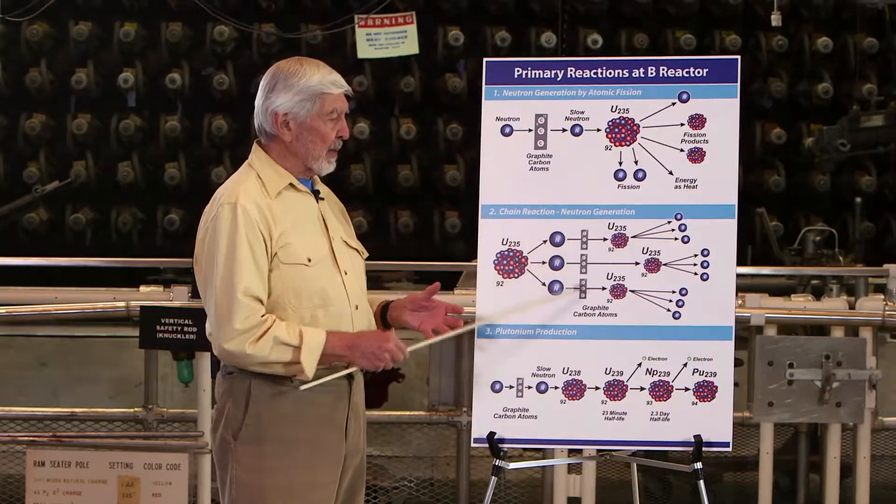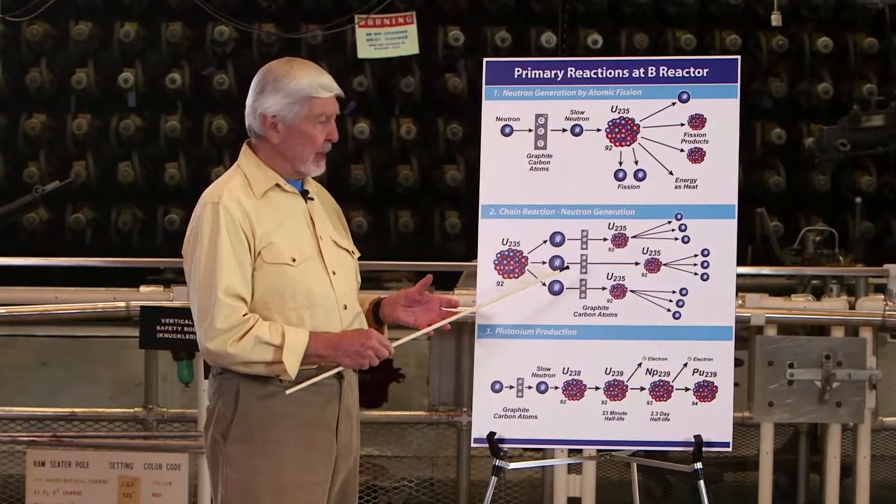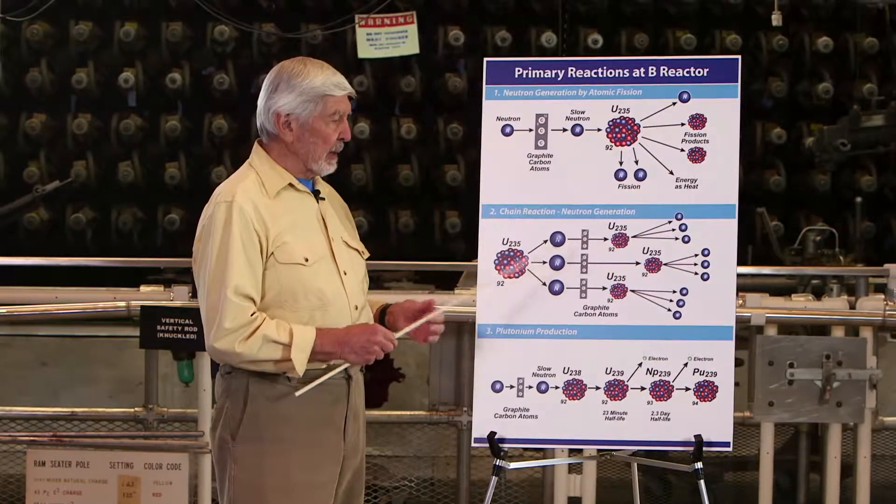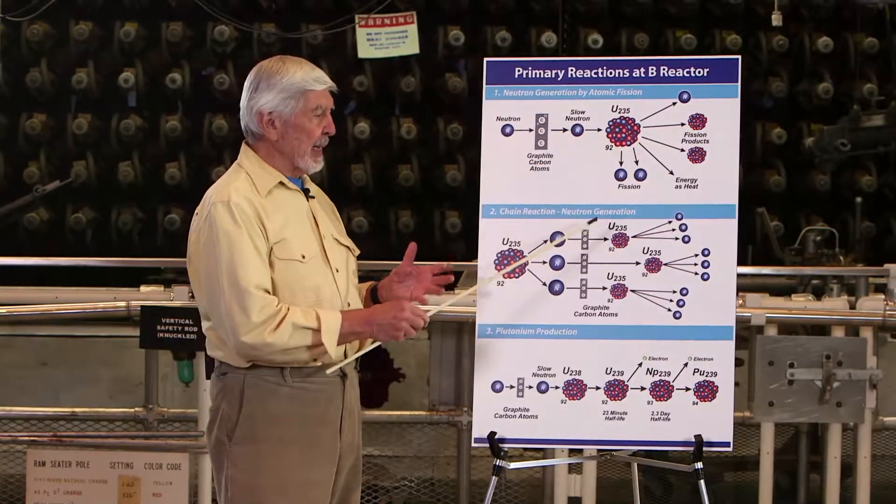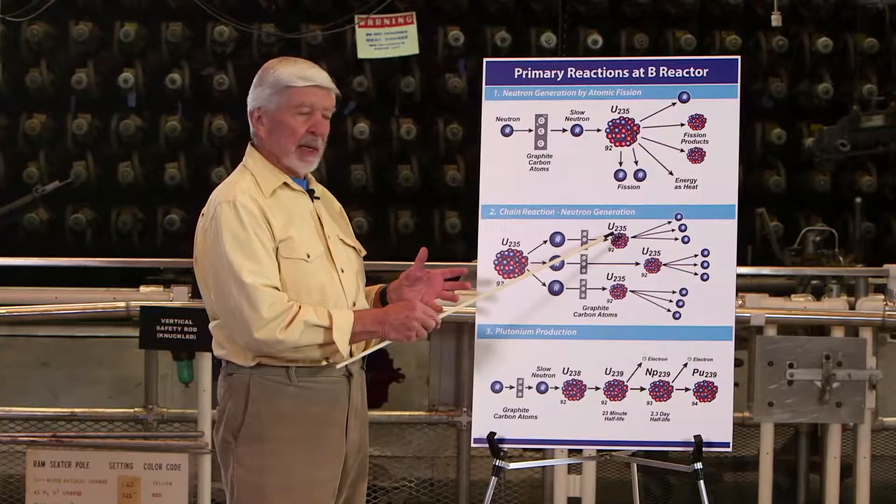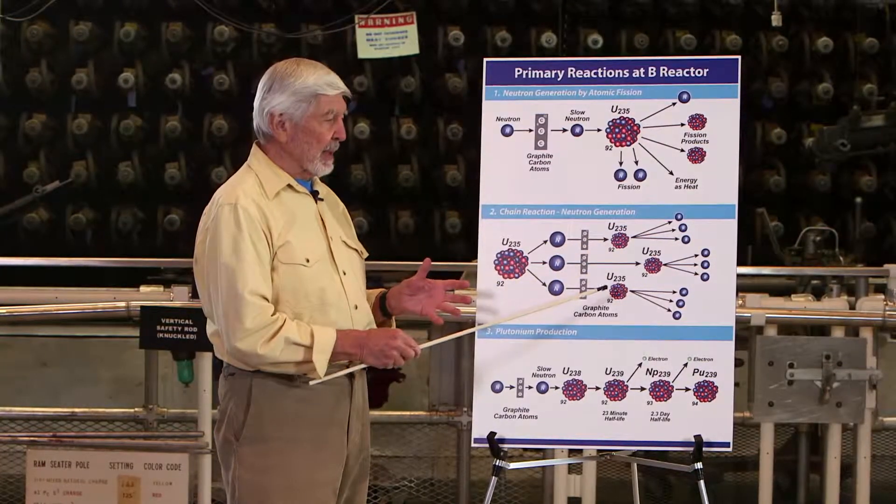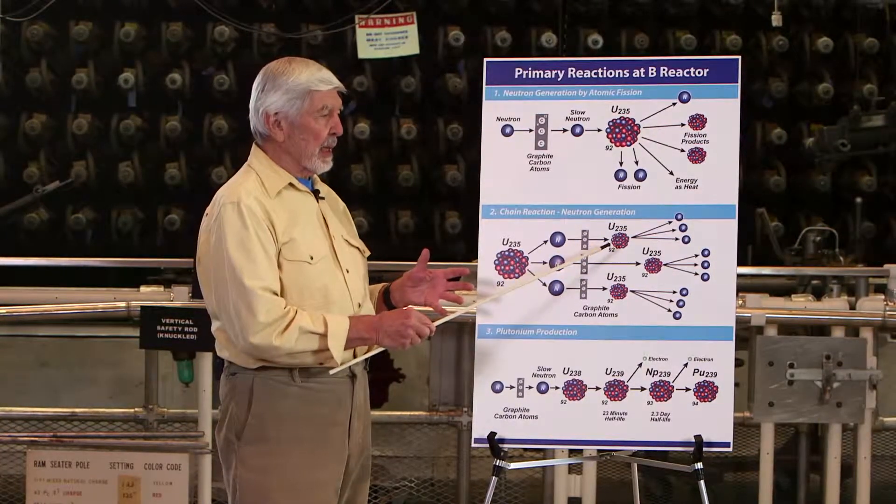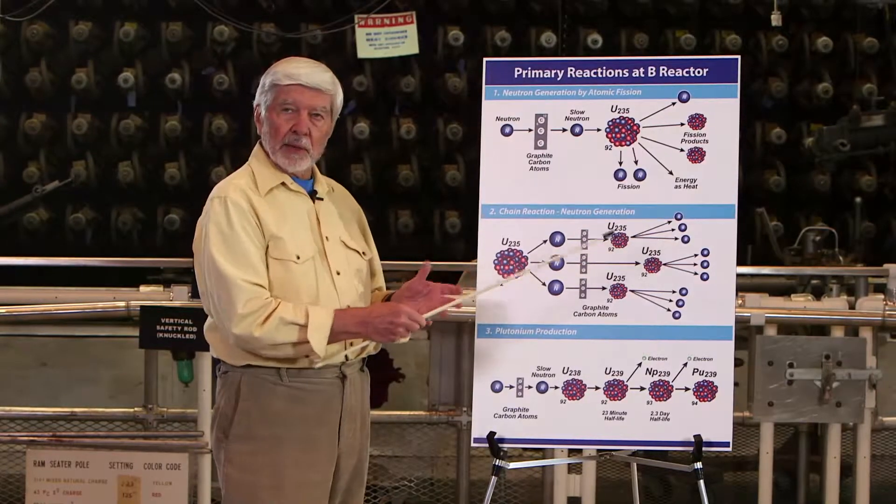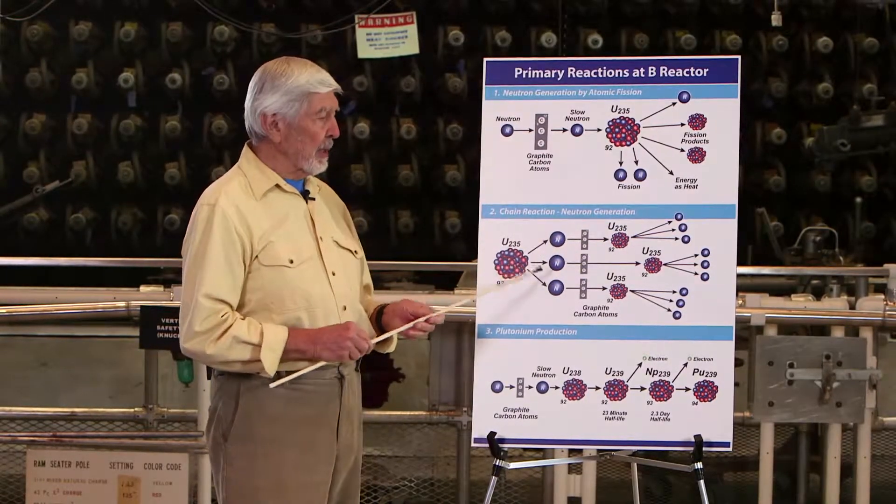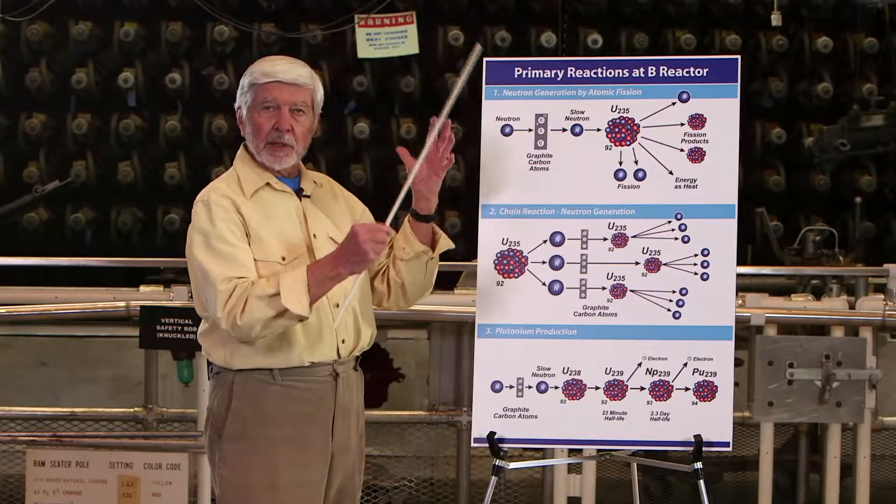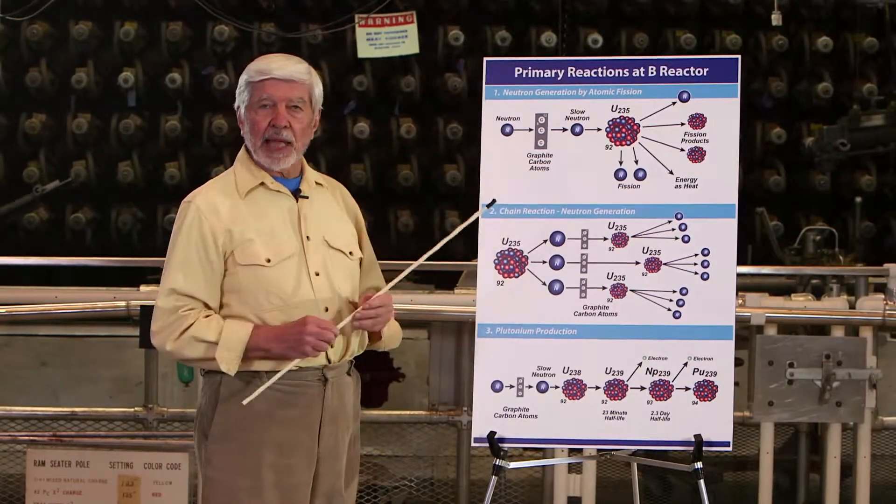they in turn bounce off of the carbon atoms in the reactor and are slowed down until they intercept other uranium-235 atoms. And those atoms release two to three other neutrons, so three neutrons become nine neutrons, become 27 neutrons, and it all happens in a flash.